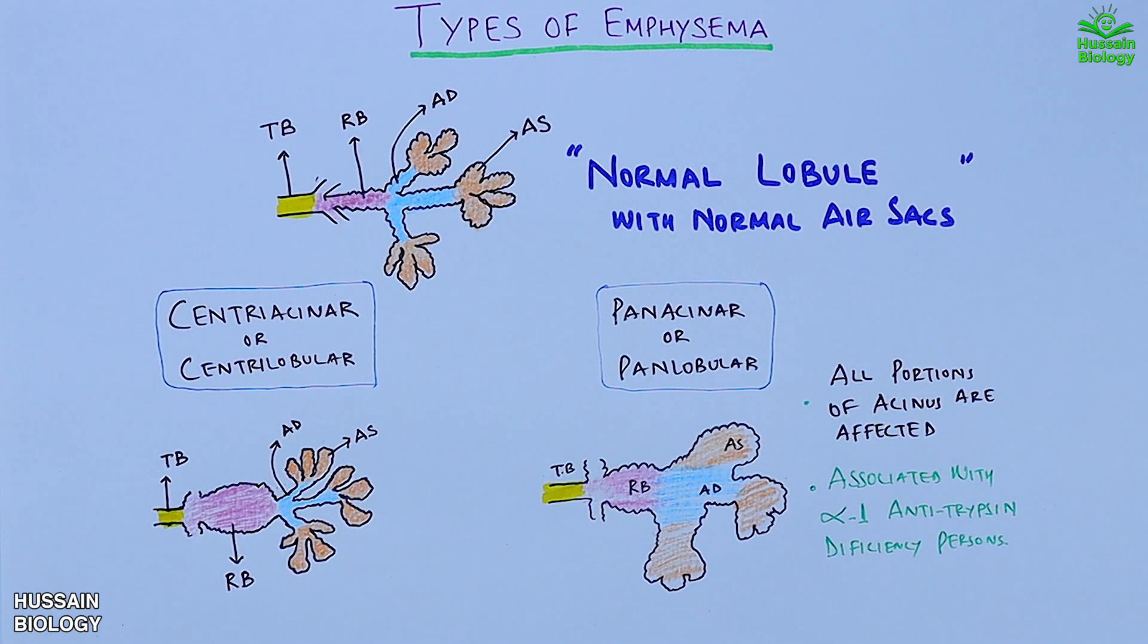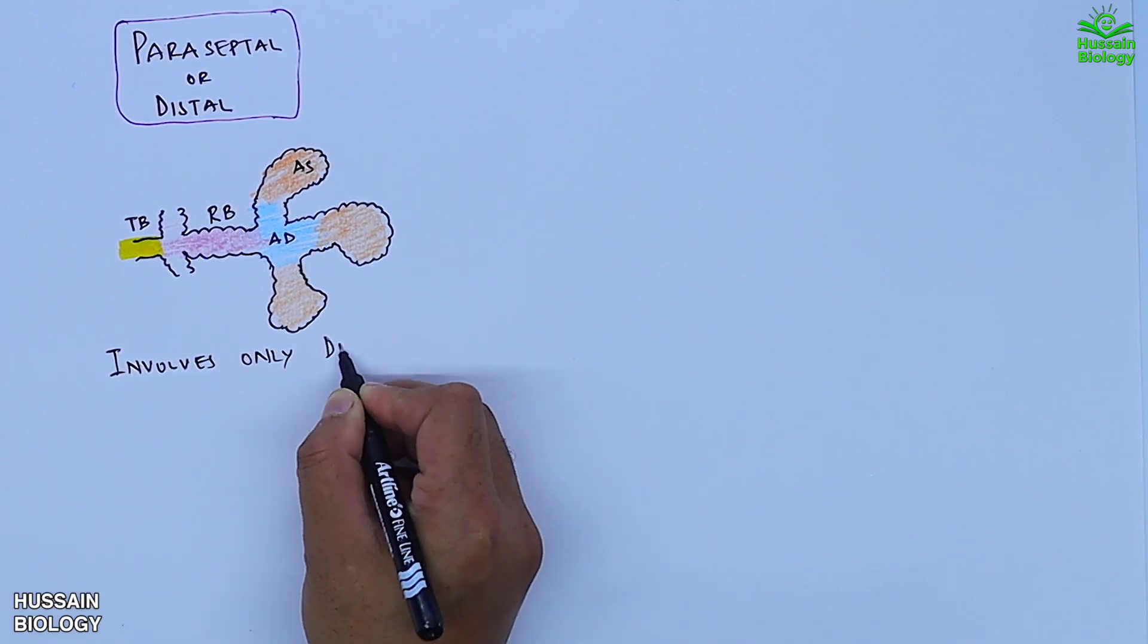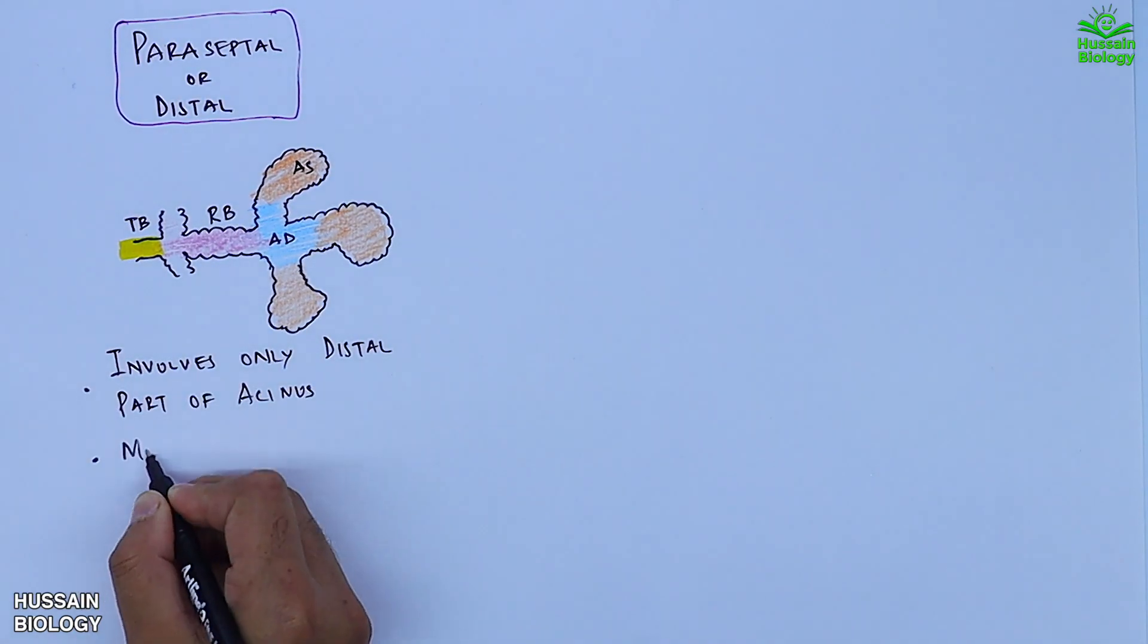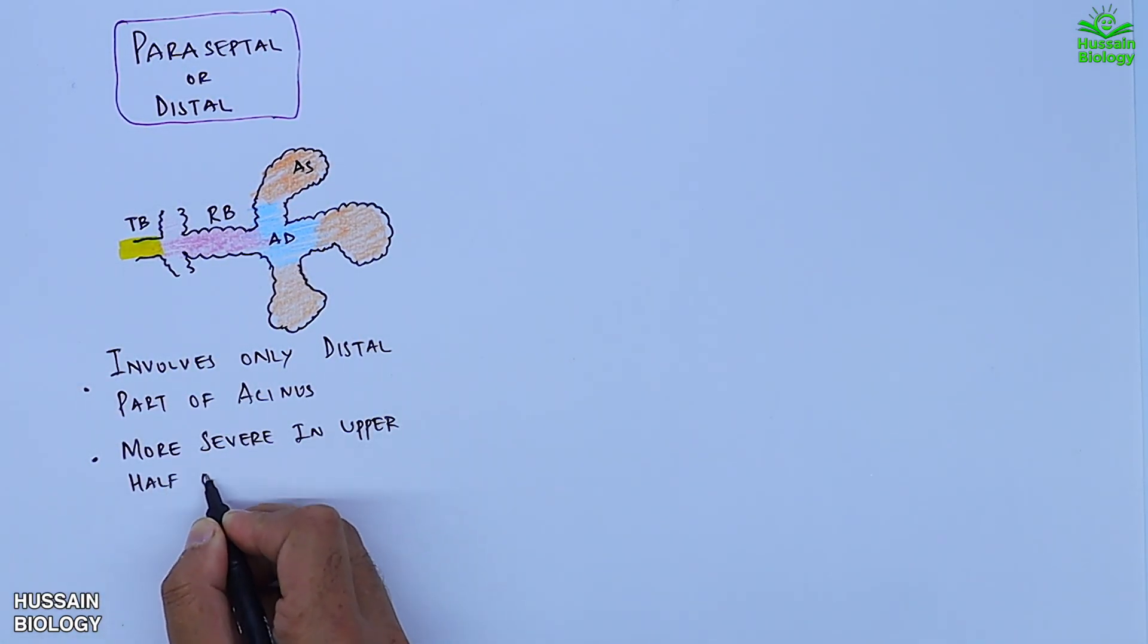Then we have the third type, paraseptal or distal amphysema. In this diagram we can see it involves only the distal part of the acinus and mostly affects the upper half of the lungs.